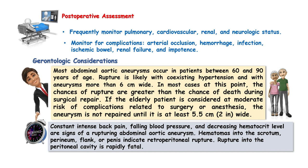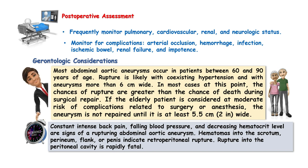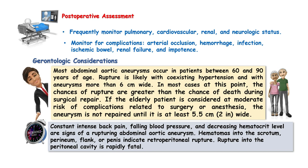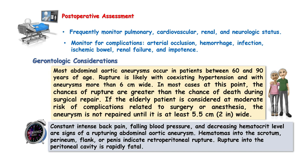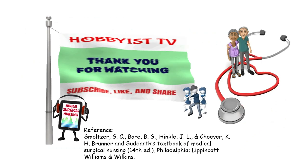Gerontologic considerations: most abdominal aortic aneurysms occur in patients between 60 and 90 years of age. Rupture is likely with coexisting hypertension and with aneurysms more than 6 centimeters wide — at that point, the chance of rupture is greater than the chance of death during surgical repair. If the elderly patient is at moderate risk related to surgery or anesthesia, the aneurysm is not repaired until it is at least 5.5 centimeters wide. Signs of a rupturing AAA include constant intense back pain, falling blood pressure, and decreasing hematocrit level. Hematomas into the scrotum, perineum, flank, or penis indicate retroperitoneal rupture. Rupture into the peritoneum is rapidly fatal.